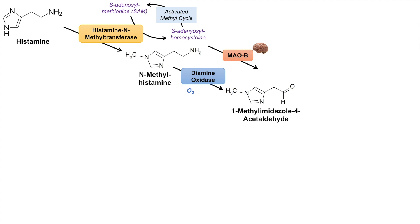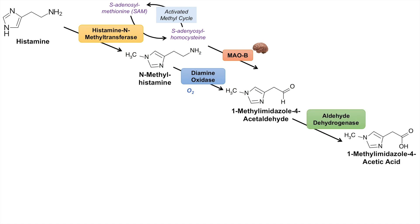Once we have 1-methyl-imidazole-4-acetaldehyde, it can be acted on by the enzyme aldehyde dehydrogenase to form 1-methyl-imidazole-4-acetic acid. This enzyme requires NAD+ as a cofactor. This makes the product more hydrophilic, so 1-methyl-imidazole-4-acetic acid can then be excreted in the urine.